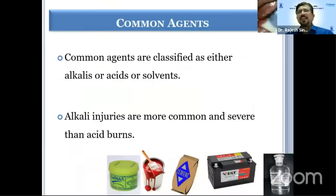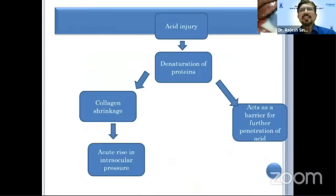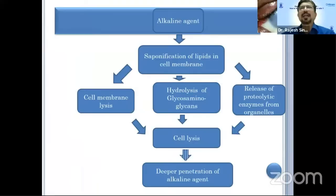The common agents are alkalis and acids. Acid injury causes less damage because it causes denaturation of proteins and collagen shrinkage, so the penetration of the chemical is less. But with alkali, there is saponification of lipids in the cell membrane, leading to hydrolysis of the cell wall and causing deeper penetration.